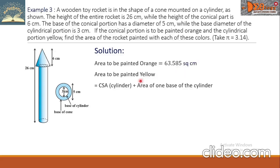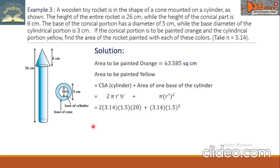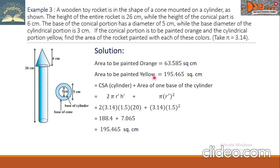The area to be painted yellow is the CSA of the cylinder plus the area of one base of the cylinder: 2 × 3.14 × 1.5 × 20 plus 3.14 × 1.5². Simplifying: 188.4 plus 7.065, giving a total yellow area of 195.465 square centimeters.